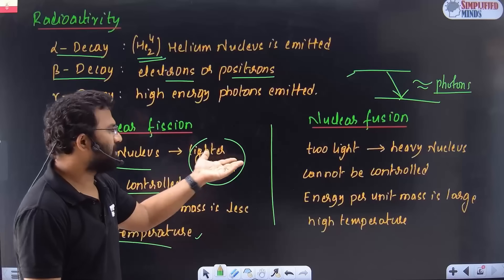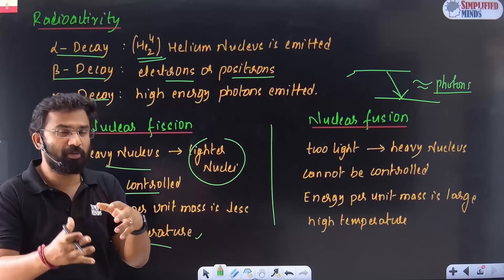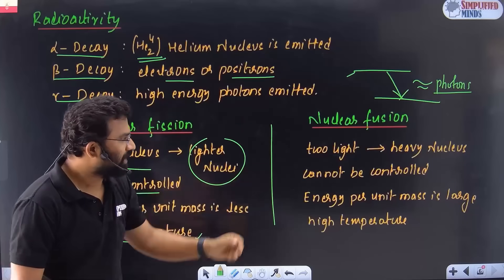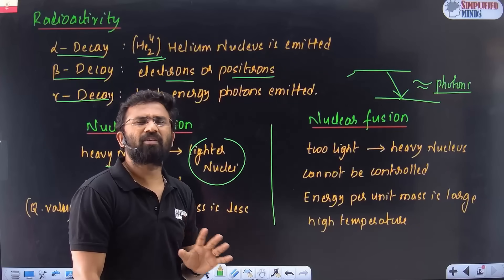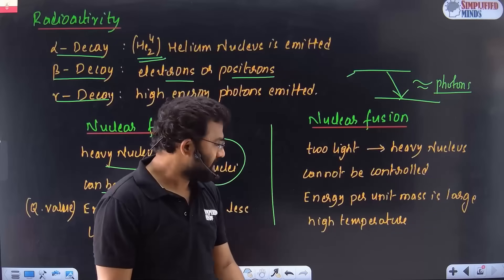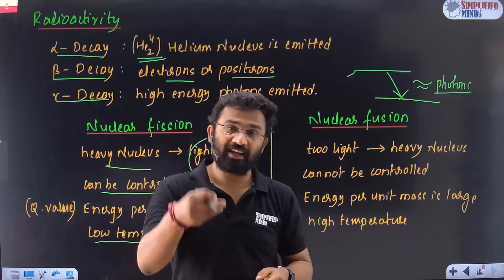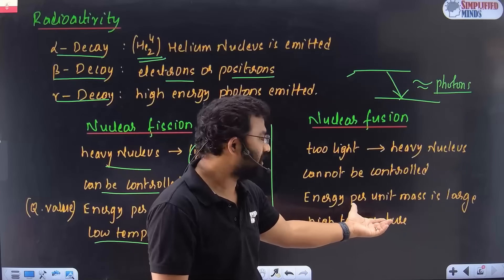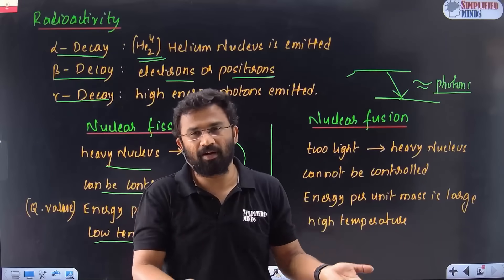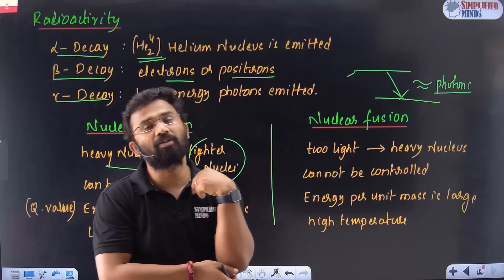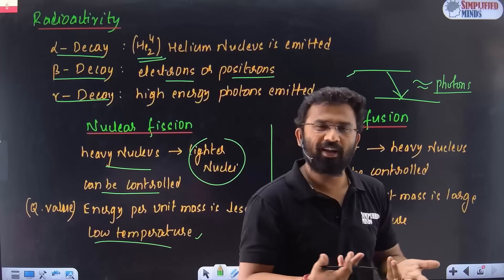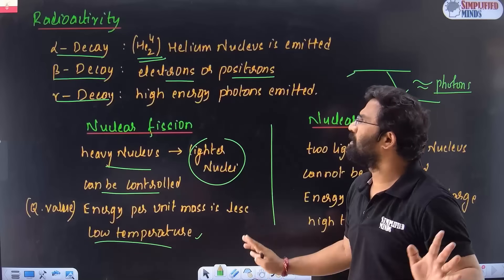Nuclear fusion, it happens when two lighter nuclei combine to become heavy nucleus. This is what happens in the sun. It cannot be controlled, very difficult to control. Who will control Surya? Energy per unit mass is very high in this case, and also high temperature. The reaction requires high temperature to carry out. In fact, even though we are getting lots of energy, but even now, that temperature cannot be achieved in our lab conditions. It's very difficult to do nuclear fusion reactions. That's very, very important.